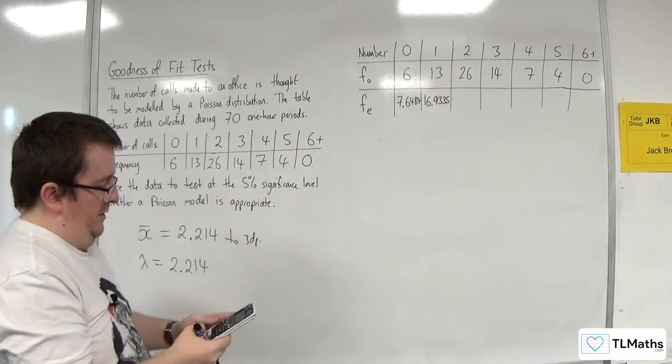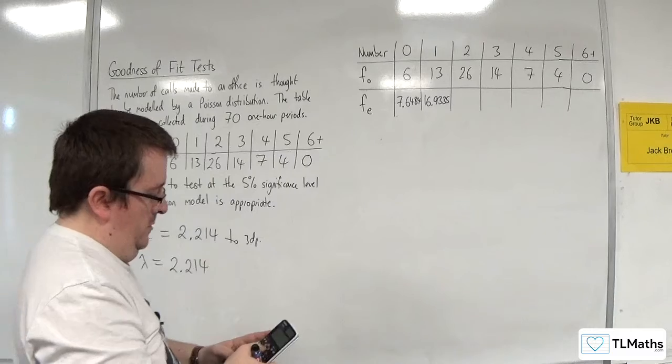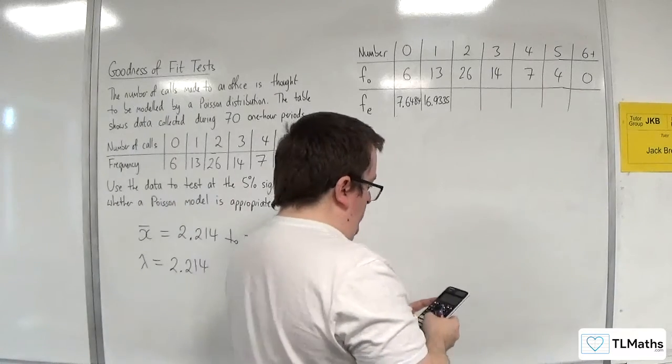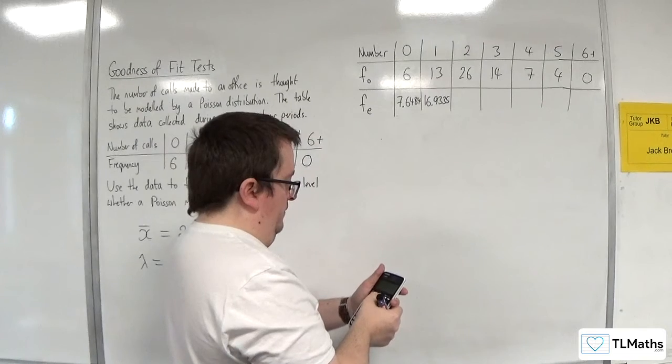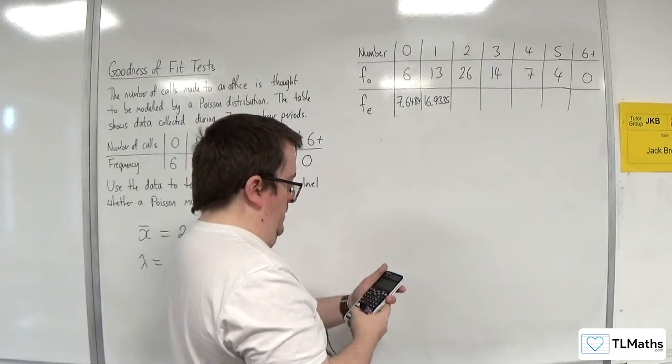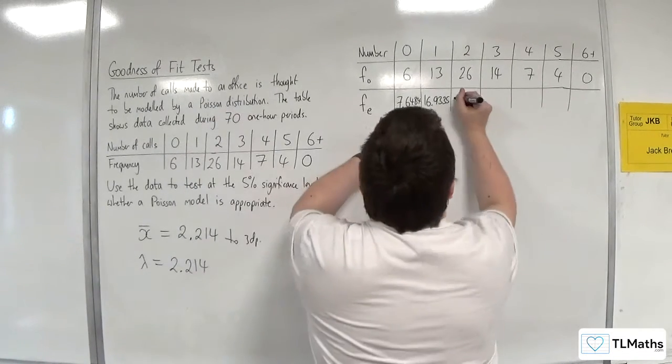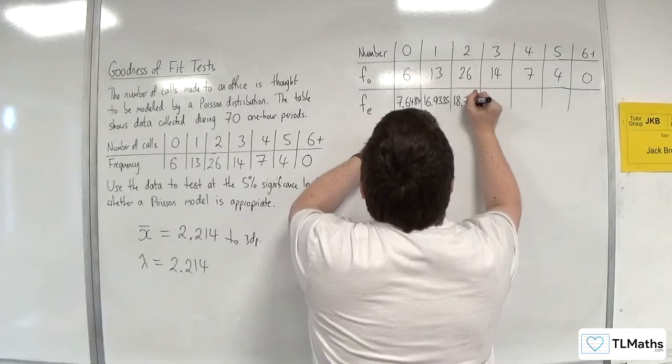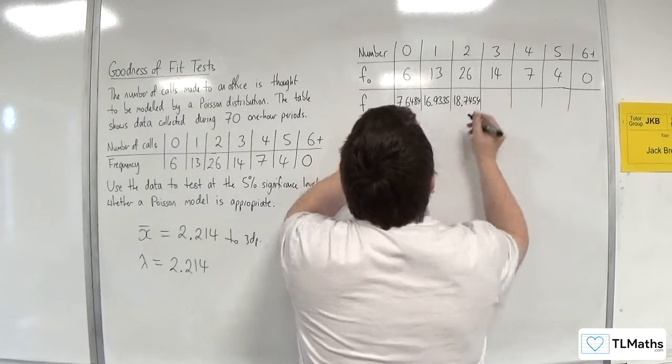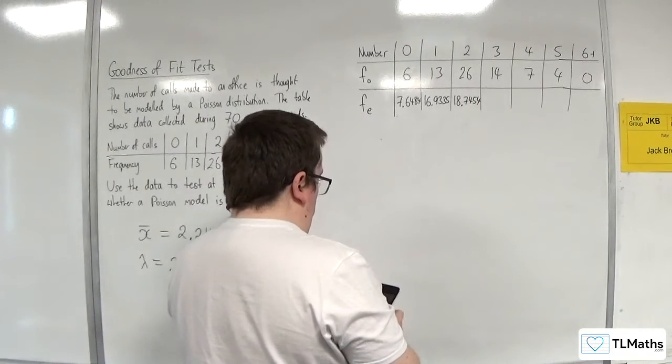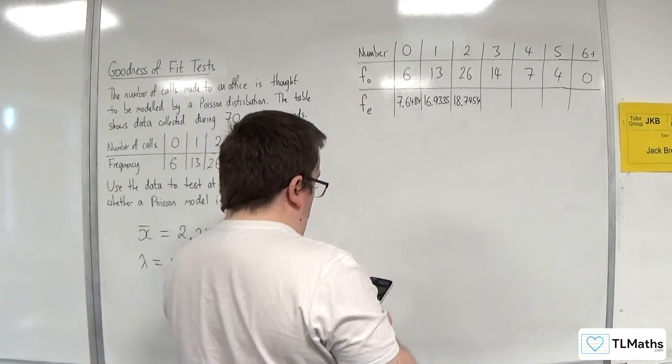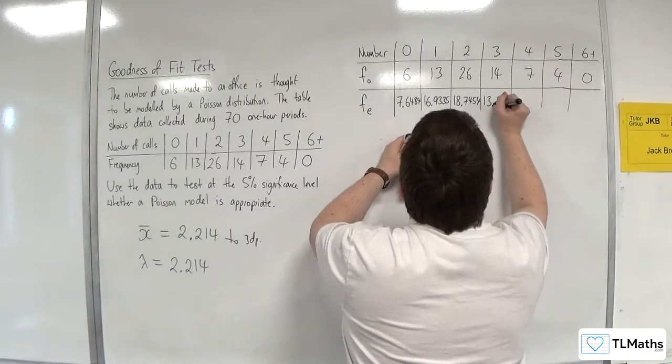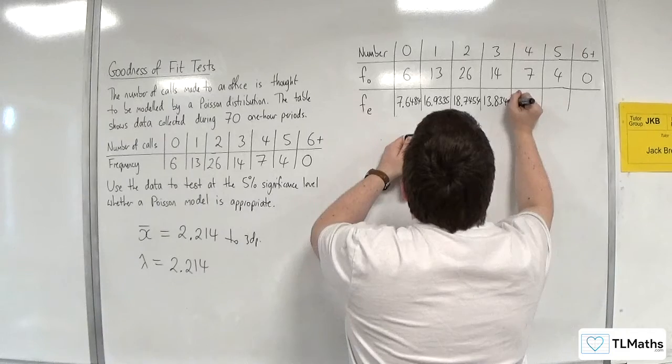Let's change it to probability of 1: 16.9335. Let's change it to 2: 18.7454. Let's change it to 3: 13.8341.